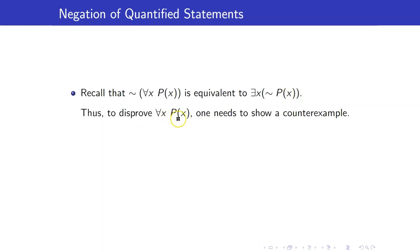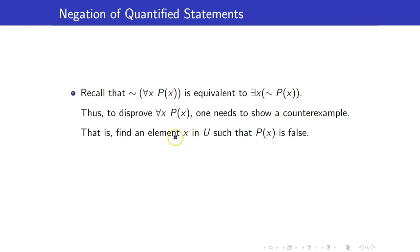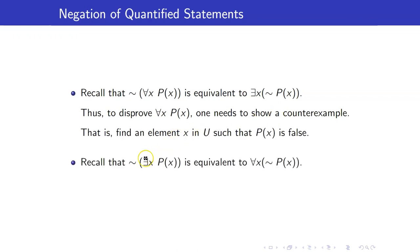To disprove 'for all x, P of x', one needs to show a counterexample — we have to find an element x such that P of x is false. And when we are disproving an existential statement, it is just equivalent to proving 'for all x, not P of x'.